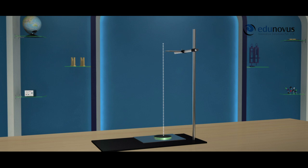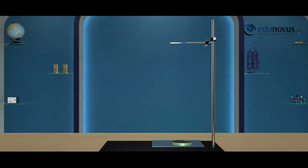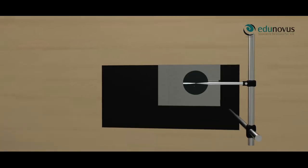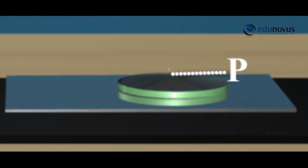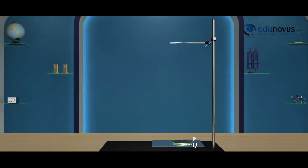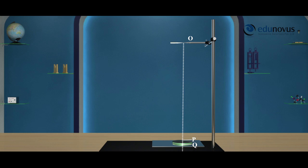Now adjust the object needle by looking into the lens so that it forms a sharp and clear image. Here P is the upper surface of the lens, Q is the point on the plane mirror, and PQ are the points on the principal axis. Now measure OP and OQ. The mean of OP and OQ gives the focal length of the lens.